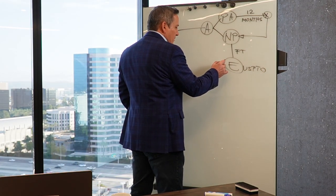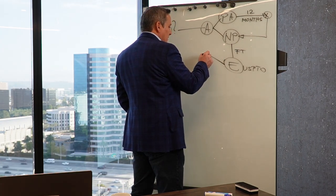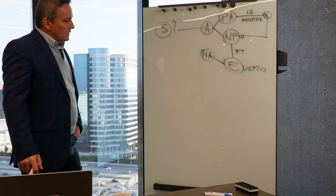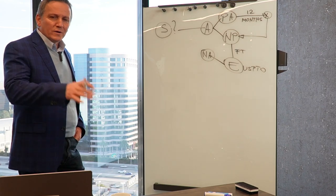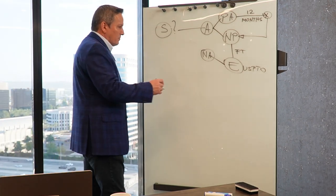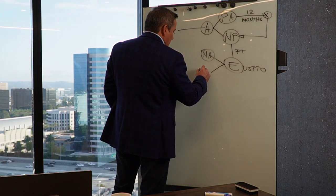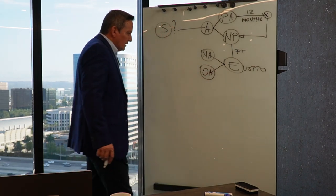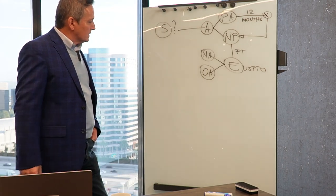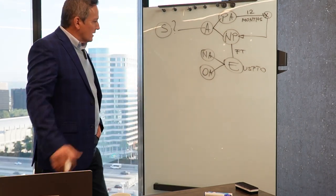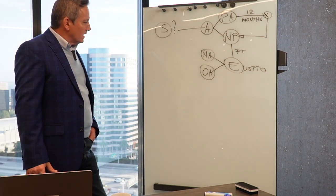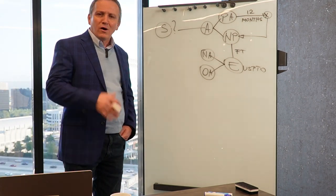After the examiner conducts the prior art search and patentability analysis, two things can happen. The examiner can issue what is called a notice of allowance, meaning all the claims are allowable and you are on track to get your utility patent. Most of the time, though, the examiner will issue an office action stating the reasons why some or all of the claims are being rejected — based on lack of novelty, obviousness, or because the claims are too close to the prior art.